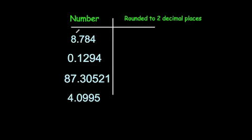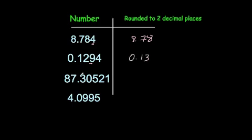Let's look at a few questions — round all these numbers to two decimal places. 8.784: the third decimal place is a 4, so we round down: 8.78. Next, 0.1294: the third decimal place is a 9, so we round up: 0.13. Next, 87.30521: the third decimal place is a 5, so we round up: 87.31.